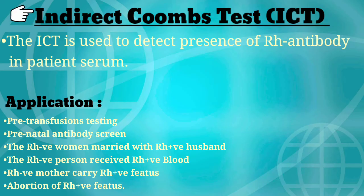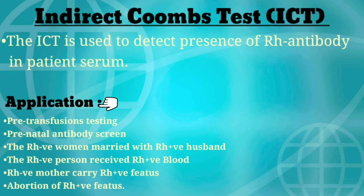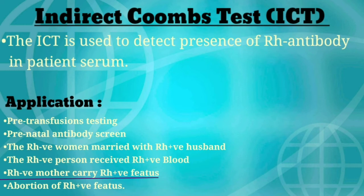Now we will learn about the indirect Coombs test. The ICT is used to detect the presence of Rh antibody in the patient's serum. Applications of ICT: it is used in pre-transfusion testing, prenatal antibody screening, when an Rh-negative woman is married to an Rh-positive husband, when an Rh-negative person receives Rh-positive blood, when an Rh-negative mother carries an Rh-positive fetus, and when there is abortion of an Rh-positive fetus.